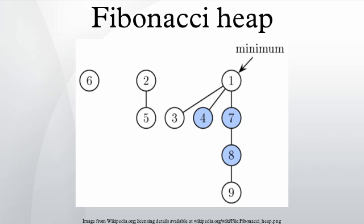This means that starting from an empty data structure, any sequence of A operations from the first group and B operations from the second group would take O(A plus B log n) time. In a binomial heap such a sequence of operations would take O((A plus B) log n) time. A Fibonacci heap is thus better than a binomial heap when B is asymptotically smaller than A.